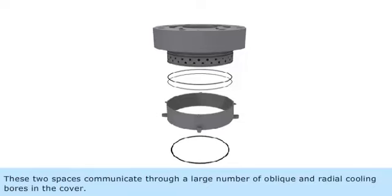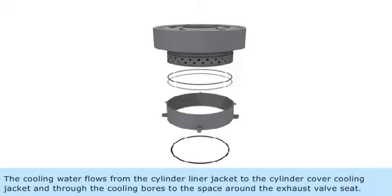These two spaces communicate through a large number of oblique and radial cooling bores in the cover. The cooling water flows from the cylinder liner jacket to the cylinder cover cooling jacket and through the cooling bores to the space around the exhaust valve seat.